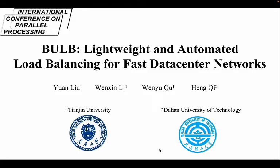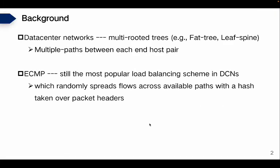Today, I will talk about our paper, BULB, that creates an automated load balancing for fast data center networks. Fat-tree topology has become standard practice in data centers because it provides multiple paths between any pair of hosts and thus provides large bandwidth. ECMP is still the most popular load balancing scheme in DCN, which randomly spreads flows across available paths with a hash taken over the packet header.